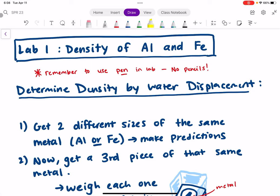Hi everyone, welcome back to chemistry. This is just going to be a quick pre-lab video that you need to watch before you can do lab one, which is all about density of aluminum and iron.